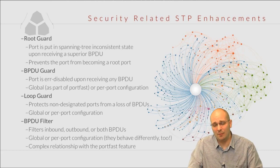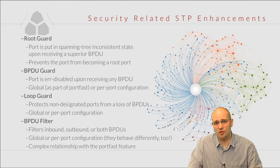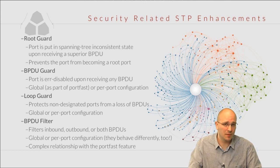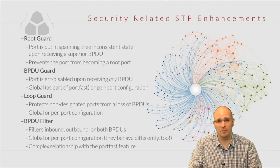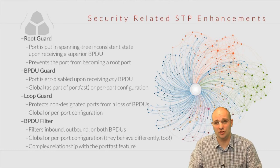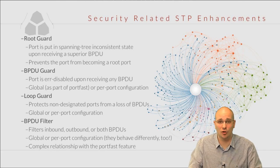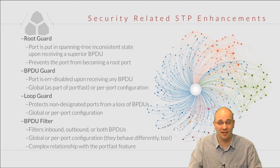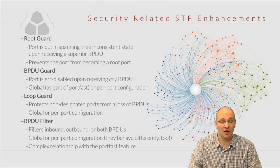The BPDU guard is a feature that protects the port on a switch from receiving any BPDUs. If any sort of BPDU is received — superior or inferior to the one that we already possess on that port — the port will be put in an error disabled state. The only way to recover from the error disabled state is to bounce the port: shut it down and then bring it out of no shutdown, unless automatic error disabled recovery has been turned on.